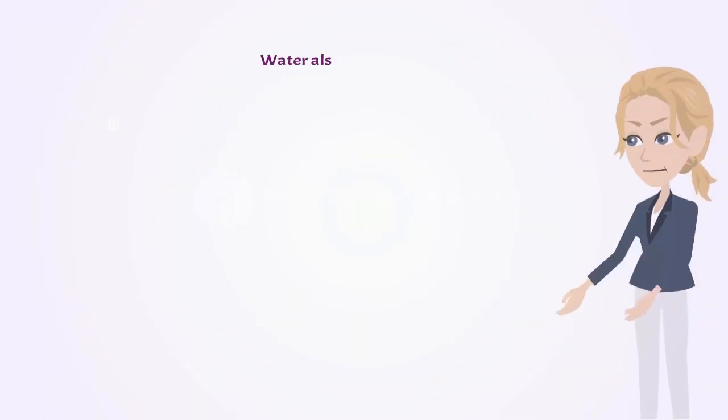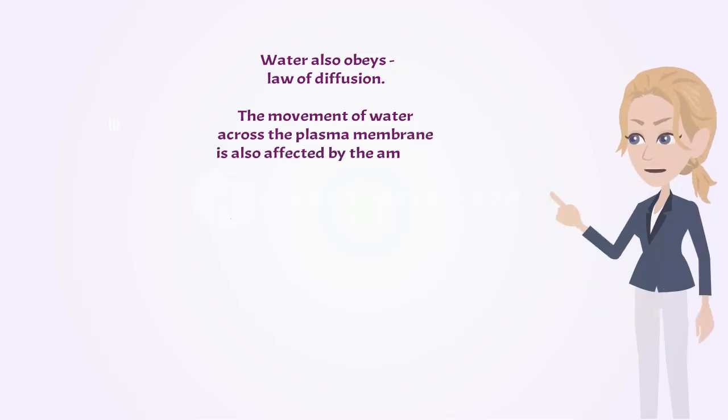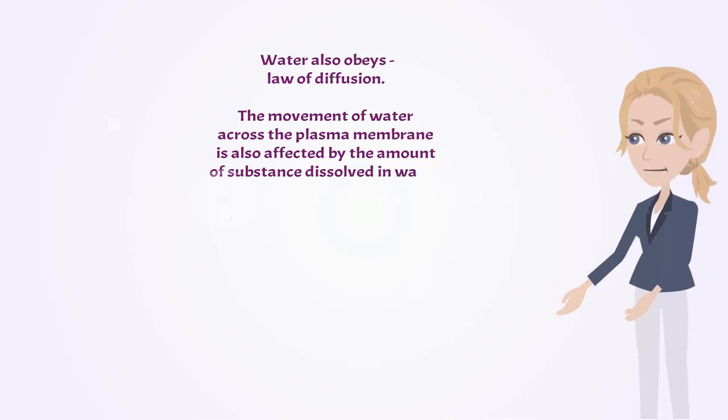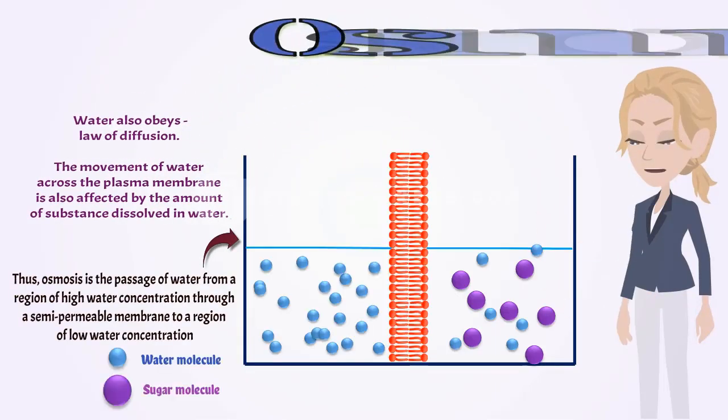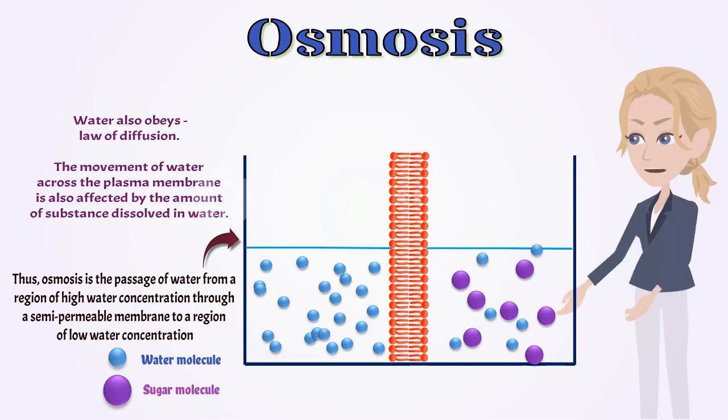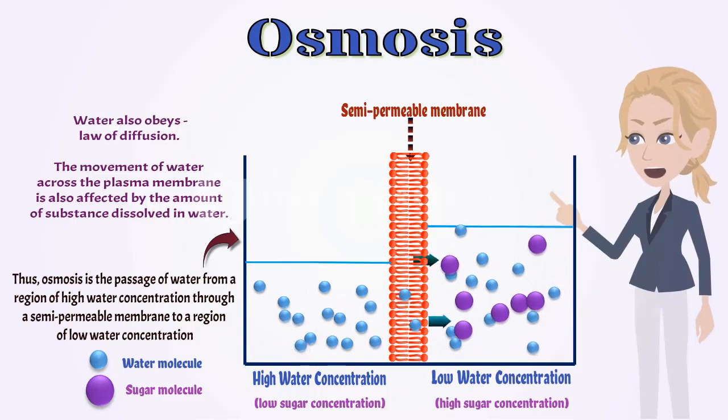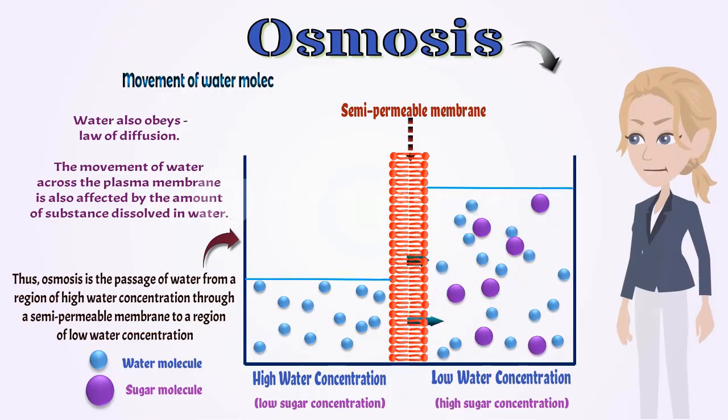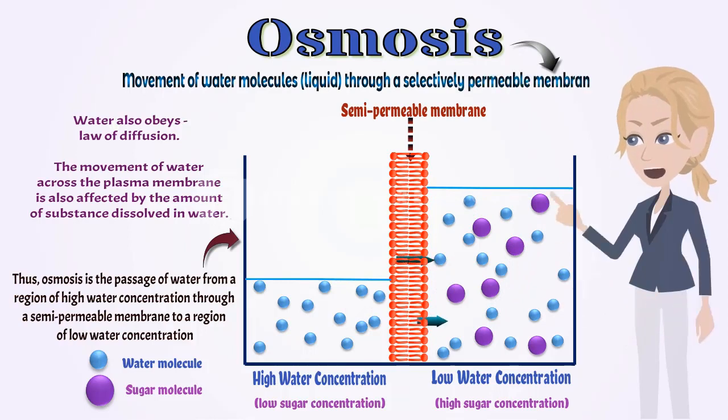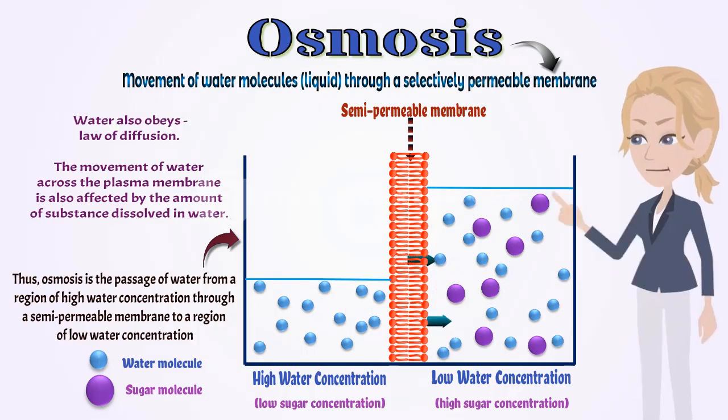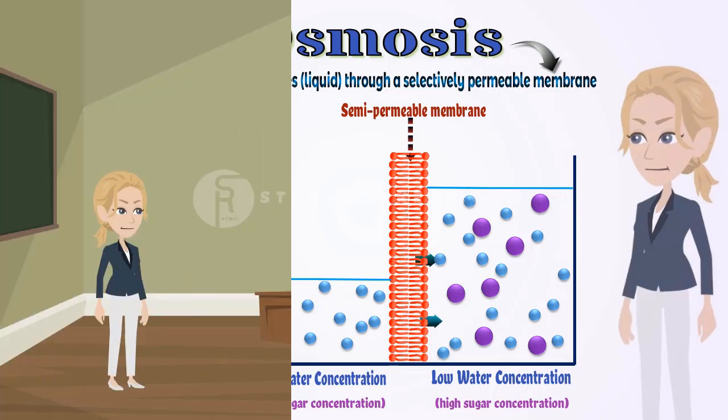Water also obeys the law of diffusion. The movement of water across the plasma membrane is also affected by the amount of substance dissolved in water. Thus osmosis is the passage of water from a region of high water concentration through a semi-permeable membrane to a region of low water concentration. In short, osmosis is the movement of water molecules through a selectively permeable membrane.